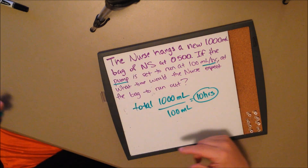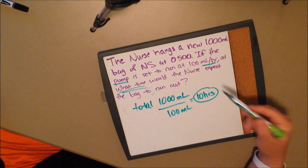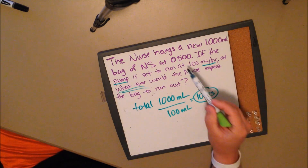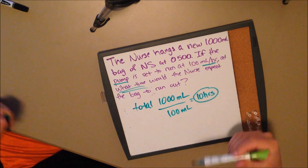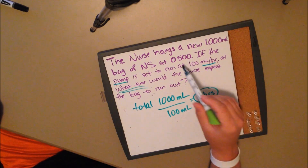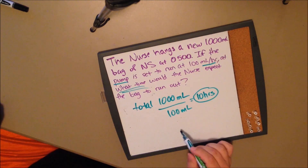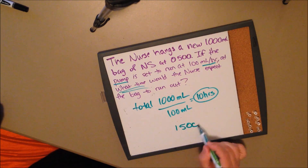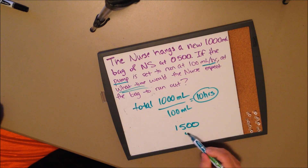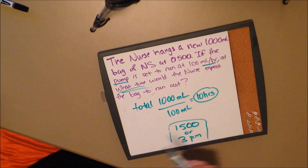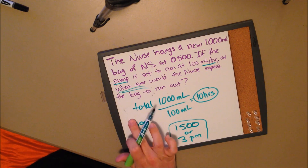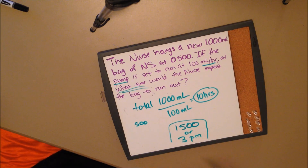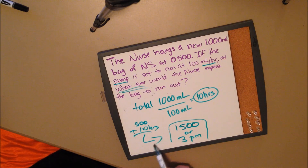Now the question asks at what time would we expect the bag to run out. We started it at 0500, which is 5 o'clock in the morning. Ten hours later — that's all it's asking. So 10 hours after 0500, what would the time be? We know it would be 1500, or 3 p.m. You're simply starting at 0500 — think of it as 5 a.m. — and adding 10 hours.